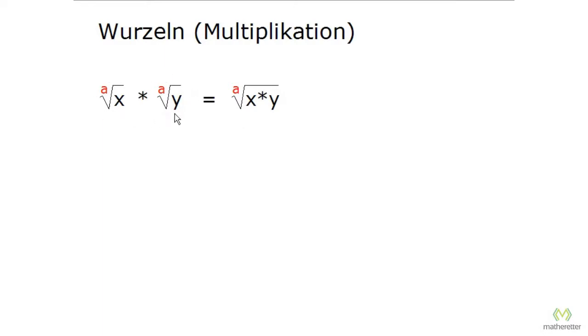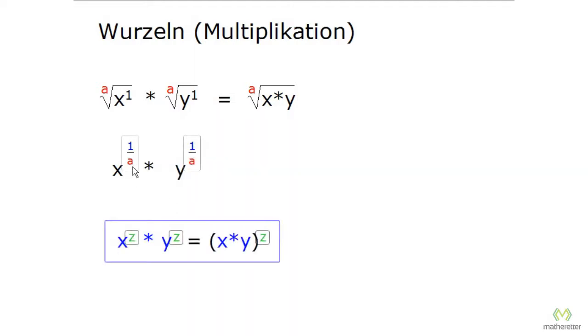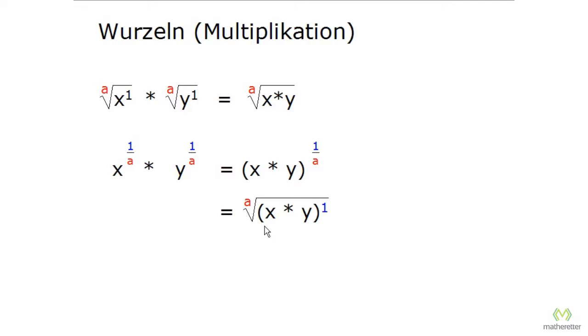From x we can make x to the 1 and from y also y to the 1. We pull the root exponent into the exponent: x to the 1 over a times y to the 1 over a. Recalling the laws of powers, we can have an equal exponent on two different bases. This is the same as x times y to the 1 over a. We turn the exponent back to a root: the ath root of x times y to the 1. We can remove the exponent and parenthesis, and we get the ath root of x times y, just like before.